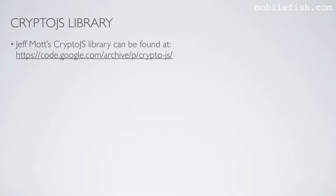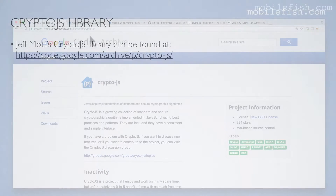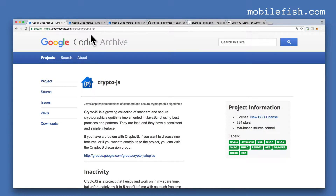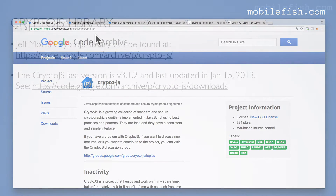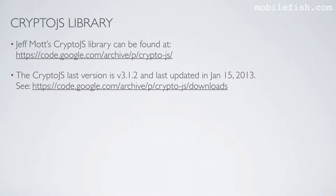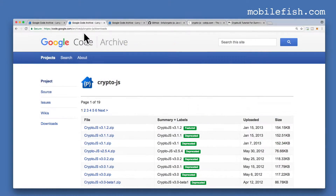Jeff Mott's Crypto.js library can be found at this location. The last version is version 3.1.2, last updated on January 15, 2013. See this location — this is the last version.